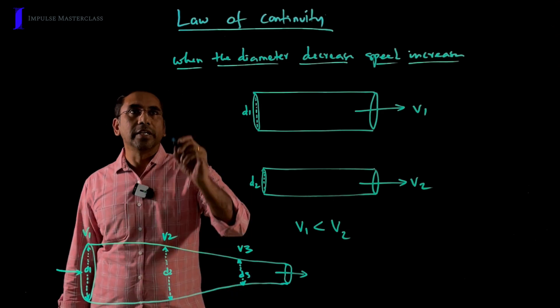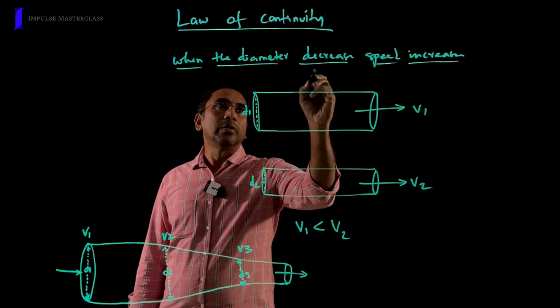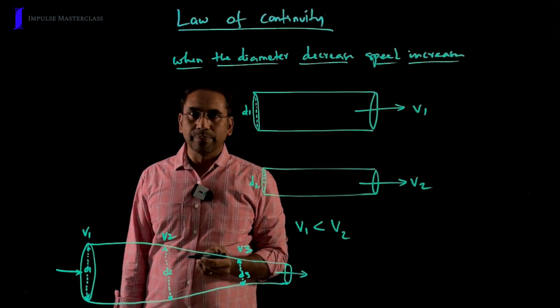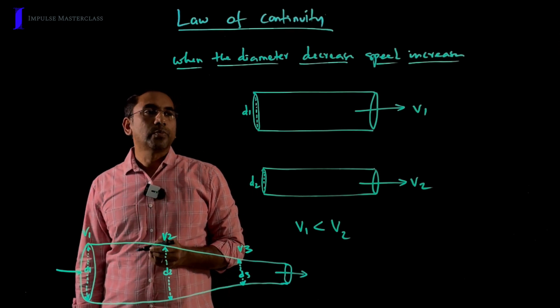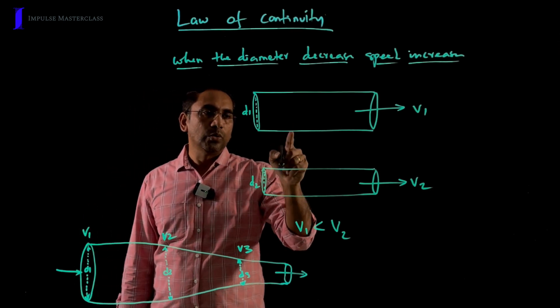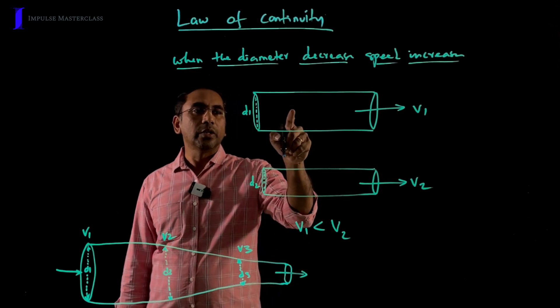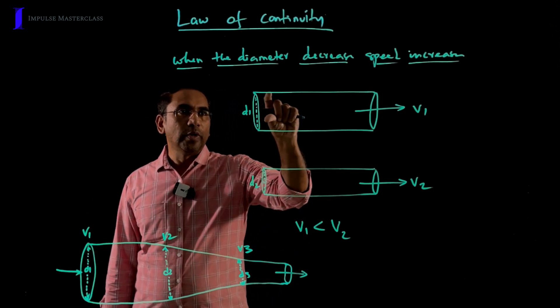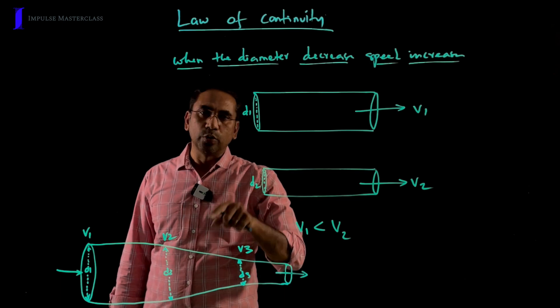Law of continuity states that when the diameter decreases, speed increases. This can be explained with simple two examples. Here I have taken two pipes with varying diameter, diameter 1 and diameter 2.